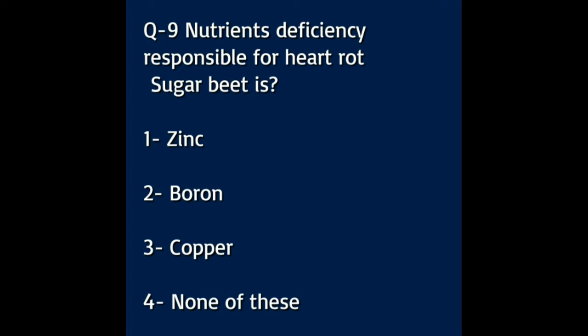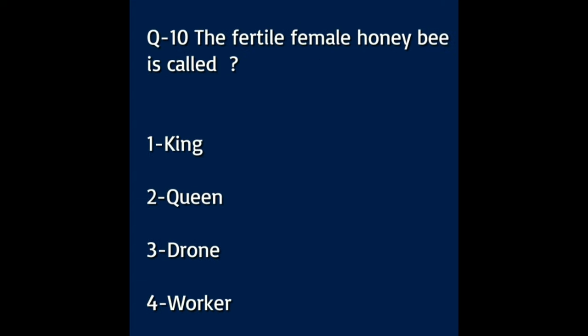Question number ten: the fertile female honeybee is called — Option A: king. Option B: queen. Option C: drone. Option D: worker. The answer to this question is queen.